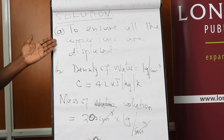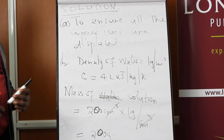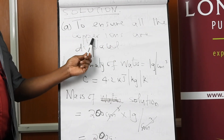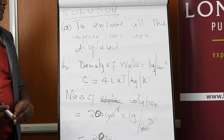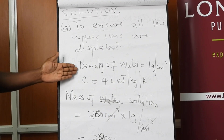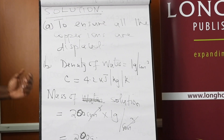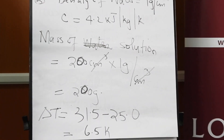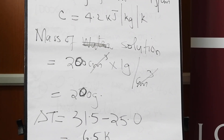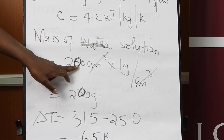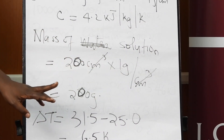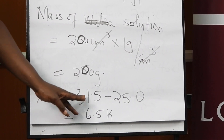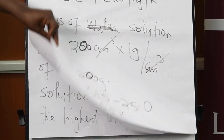Why do we use excess metal? To ensure that all the copper ions have been displaced, we use excess of the metal. Given the constants, we can work out the mass of the solution — since it is the solution that absorbs the heat energy. We were given a volume of 200 cm³ multiplied by density, giving a mass of 200 grams. The delta T is final minus initial temperature, giving 6.5 K.